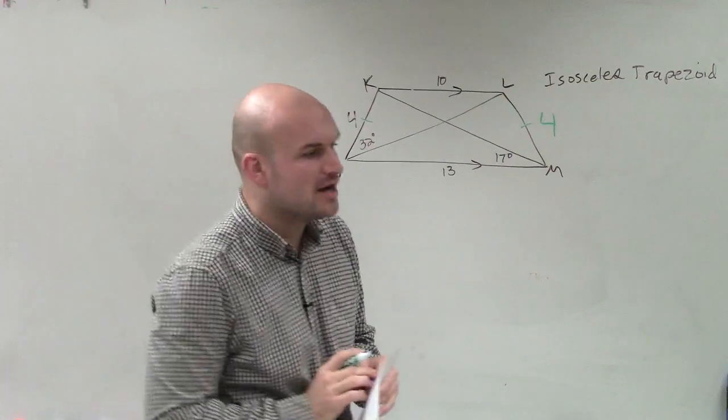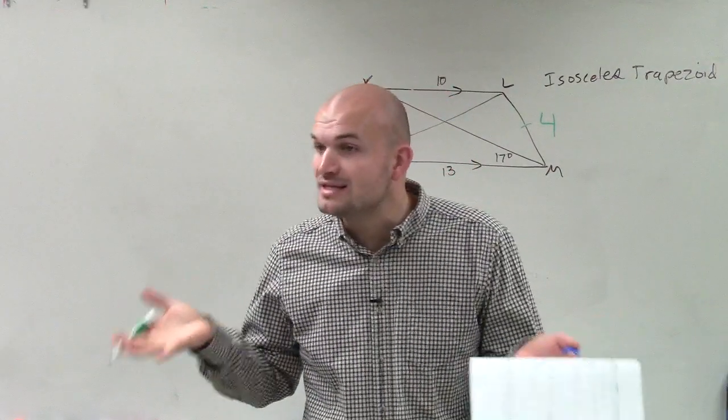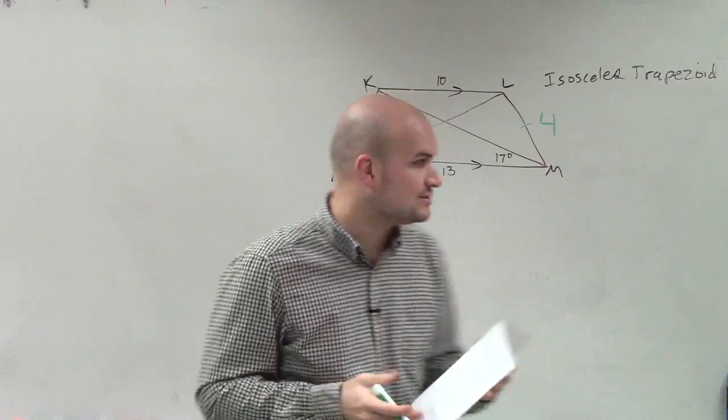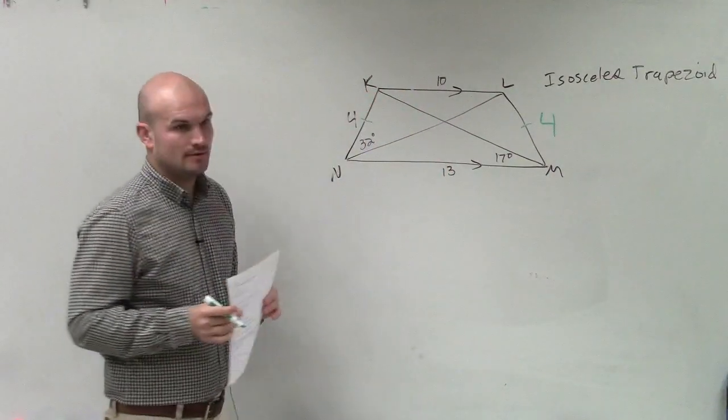Isosceles trapezoids have opposite congruent sides, as well as opposite congruent angles. What number is that? 3. 3.